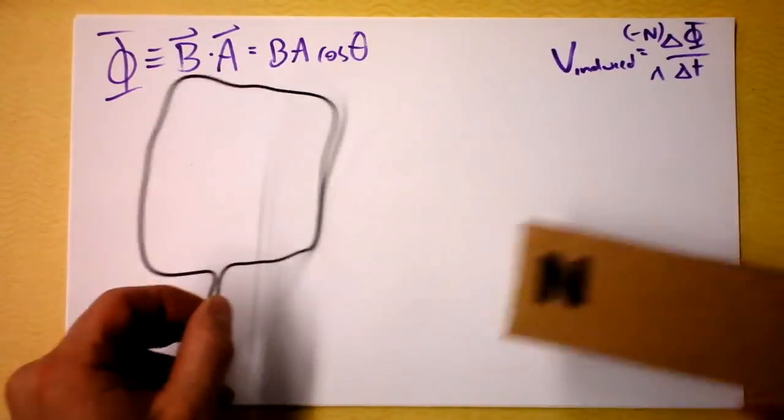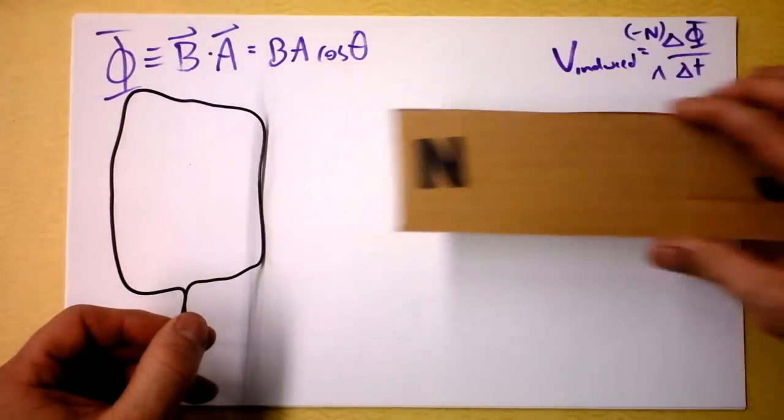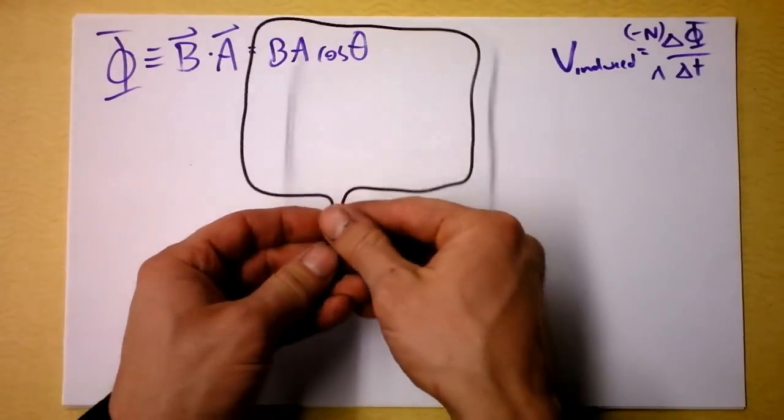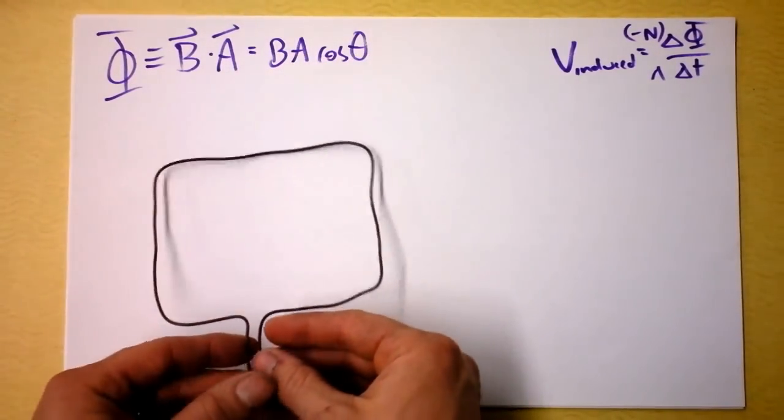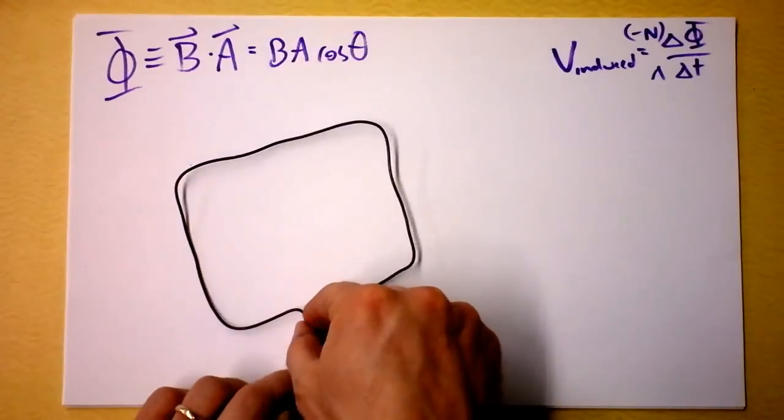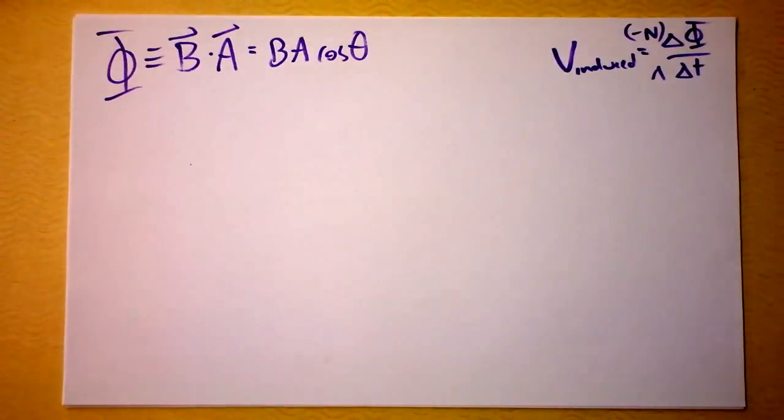We talked about changing the flux by changing the magnetic field, like bringing a magnet near it or out of it, or having the loop itself leave a magnetic field or enter it. You could also change the area. If this loop gets smaller, the flux through it will decrease.